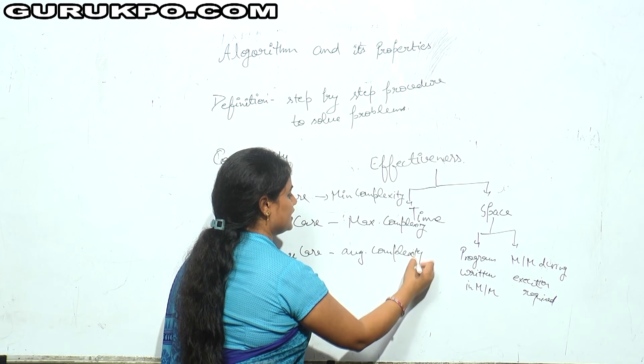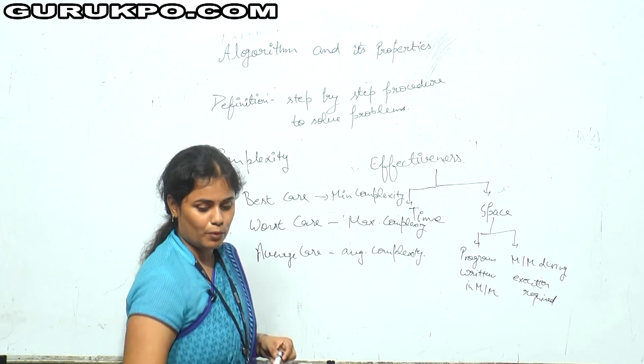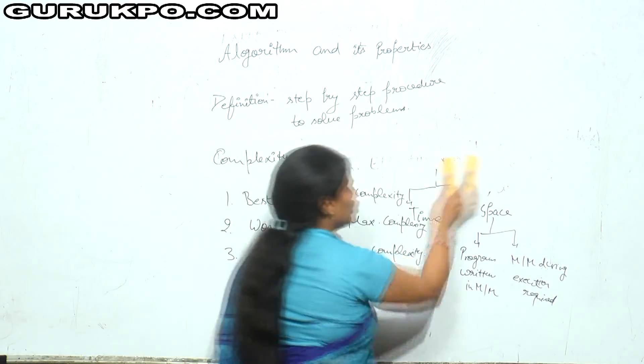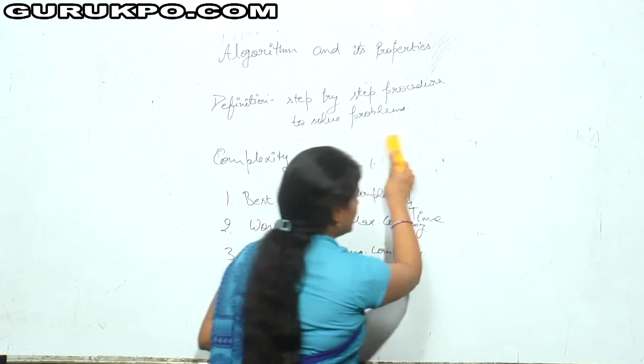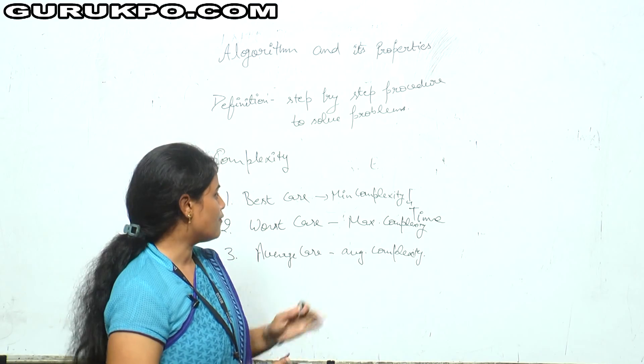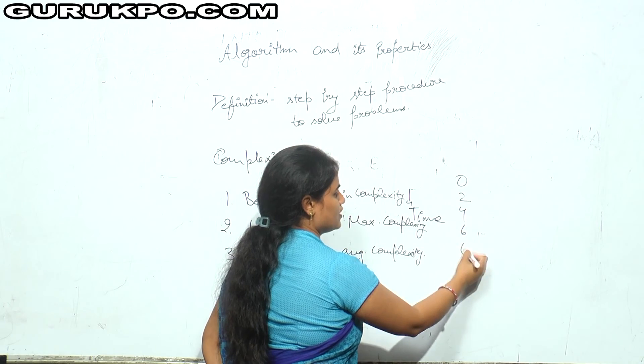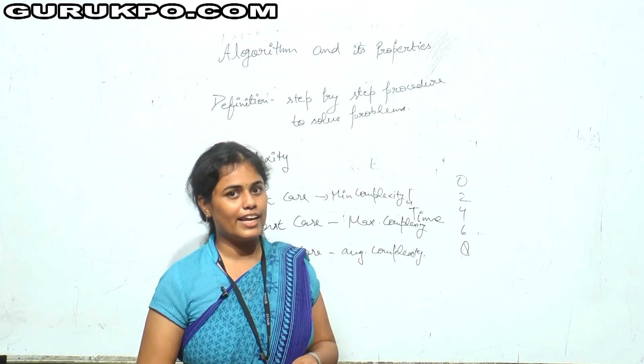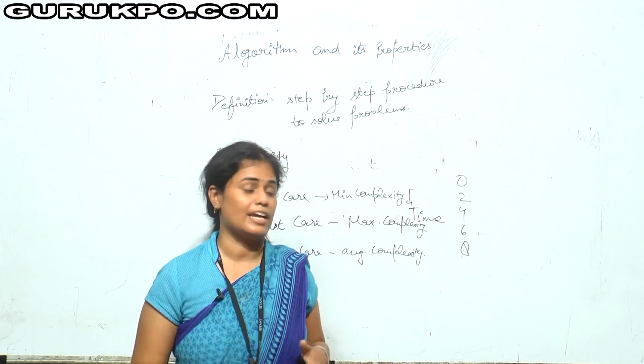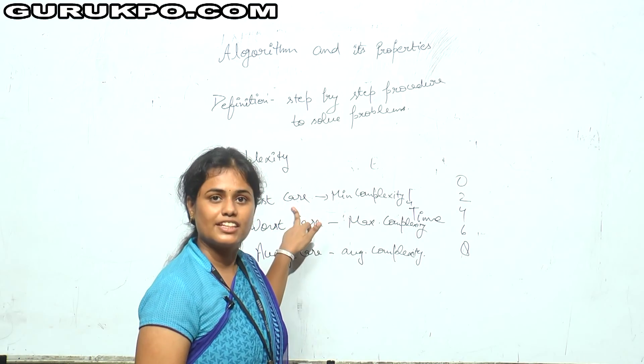We can consider these three things by the example. Suppose I write a program, write an algorithm to sort an array. I have to sort an array. Suppose I have taken the input like this: 0, 2, 4, 6, 8. This is already sorted array. Then the algorithm will take less time. Then the complexity will be the best case complexity.